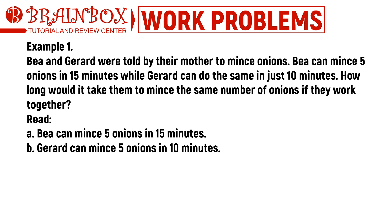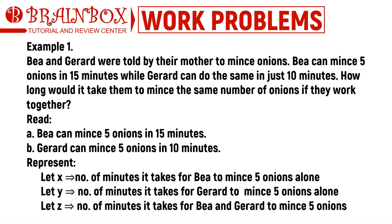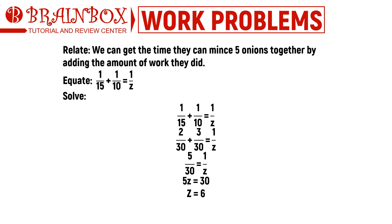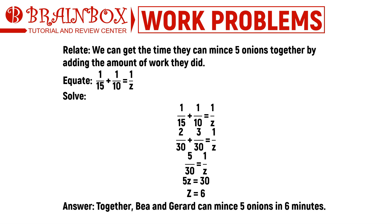Analyzing the problem, we know two things: first, Bea can mince five onions in 15 minutes; second, Gerard can mince five onions in 10 minutes. We let x = 15 (Bea's time alone), y = 10 (Gerard's time alone), and z = the time they take together. Using the general formula: 1 over 15 plus 1 over 10 equals 1 over z. Solving for z, we get 6. Therefore, together Bea and Gerard can mince five onions in 6 minutes.